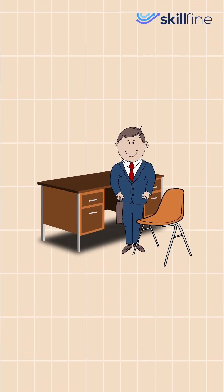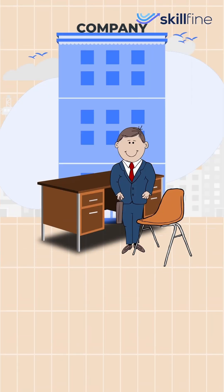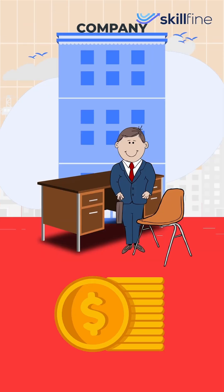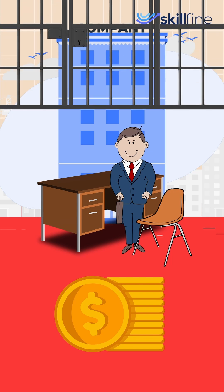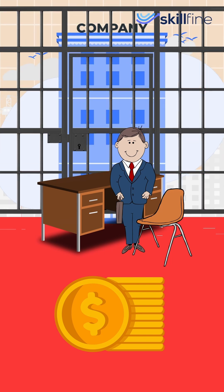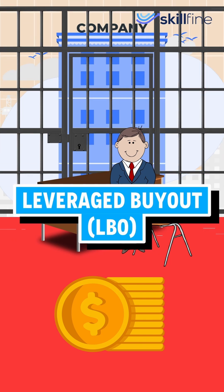Did you know investors can sometimes buy a company using debt, which they got from putting up the company's assets as collateral, and in return make money? This is called a leveraged buyout, and here's how we can build an LBO model.